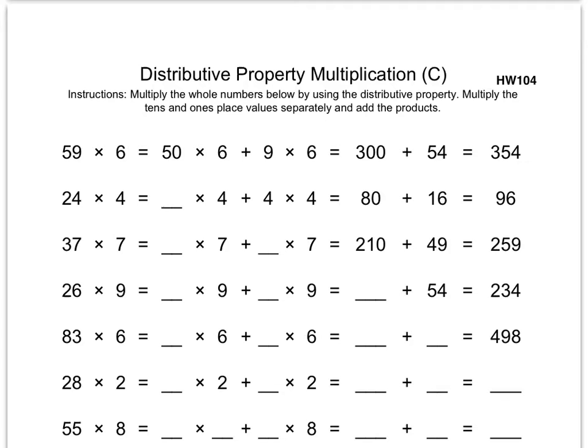Okay, and here we are on the other side. Distributive property multiplication part C. Okay, the instructions say multiply the whole numbers below by using the distributive property. Multiply the tens and ones place values separately and add the products.